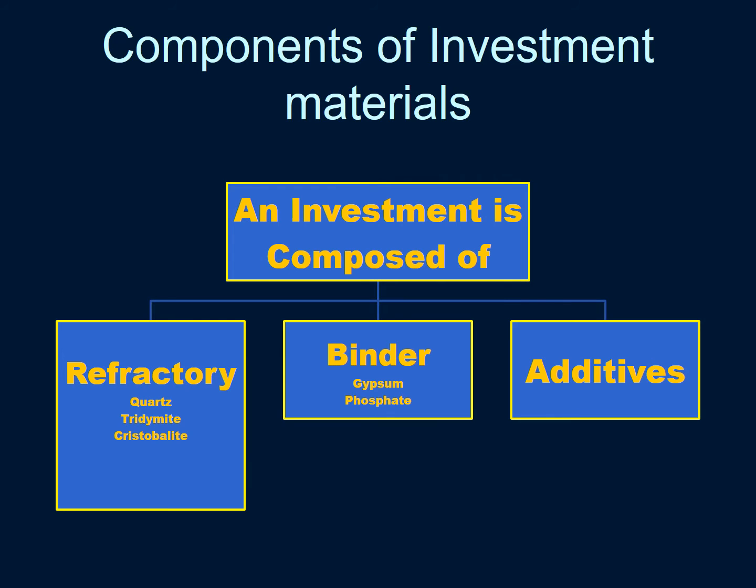Secondly, a binder. There are two types of binding materials: gypsum bonded refractories, which are mainly used with casting low melting temperature gold alloys, and phosphate bonded refractories, which are used with base metal alloys and high melting temperature gold and precious metal alloys. Thirdly, there are some additives.